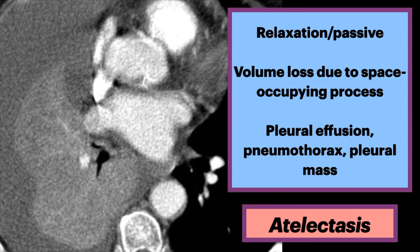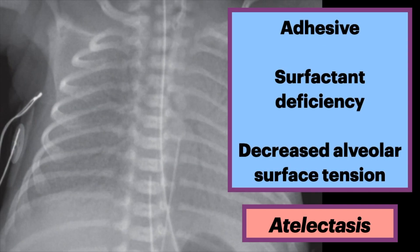The next mechanism is relaxation or passive. It is volume loss due to a space-occupying process, such as from a pleural effusion as seen here, a pneumothorax, or a pleural mass. The next type is adhesive. This is due to surfactant deficiency seen in premature neonates, and this leads to decreased alveolar surface tension.